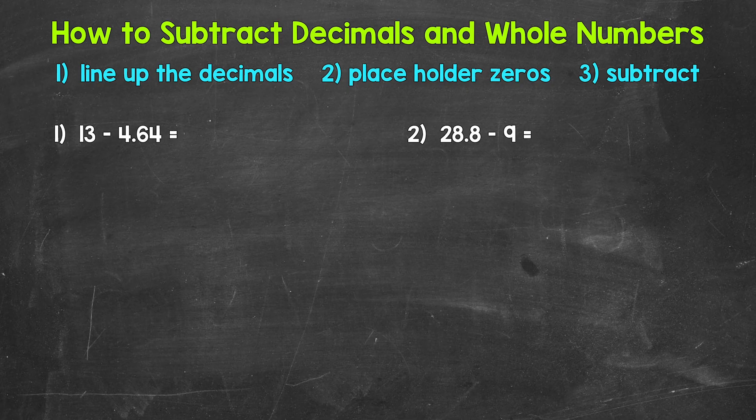Whenever we have a subtraction problem involving a decimal and a whole number, we use the same steps we use when subtracting two decimals: line up the decimals, use placeholder zeros if necessary, and subtract.